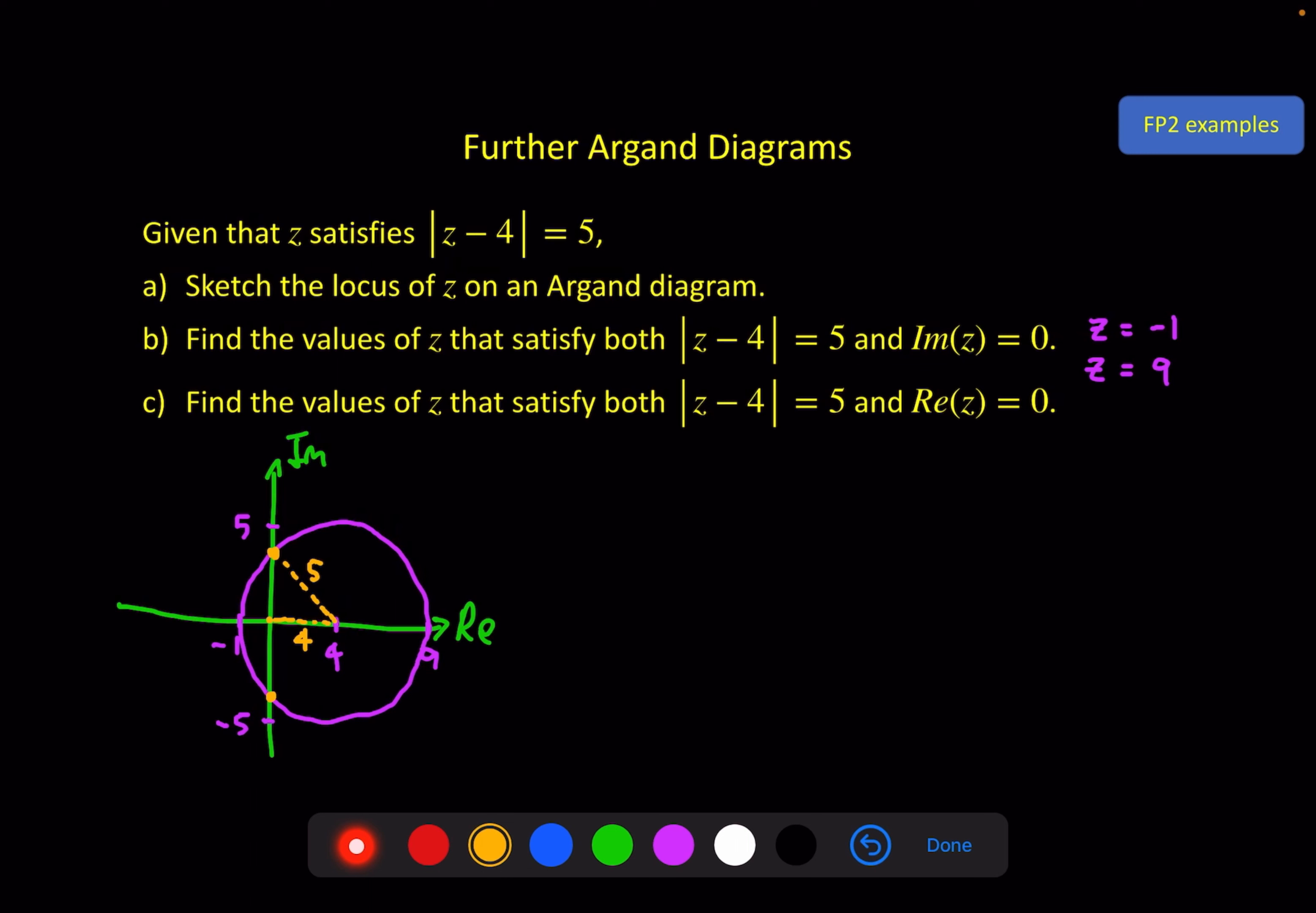So that tells me that this side here, as a Pythagorean triple, is 5 squared minus 4 squared square rooted, which is 3. And the symmetry, because we've got the diameter of the circle on the real axis, tells me that the other one must be -3. And of course these are on the imaginary axis, so that means z is equal to 3i, or z is equal to -3i.